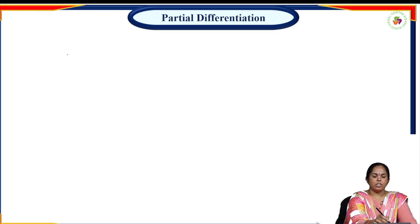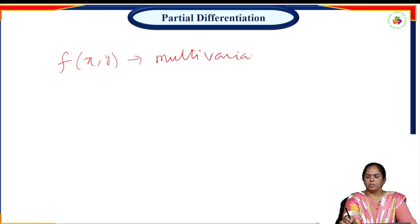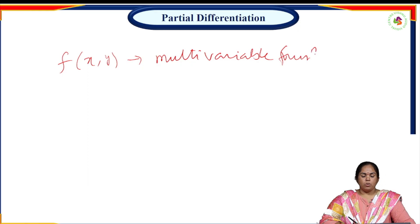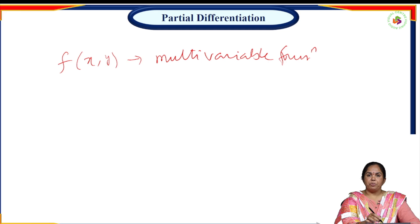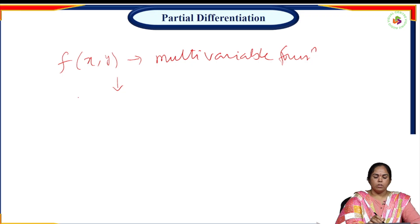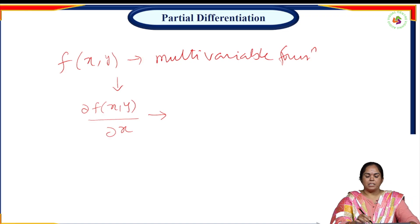Here I have a function f(x, y) which is a multivariable function. Here I have two variables x and y. If I am going to differentiate this function with respect to x, then this is called partial differentiation.